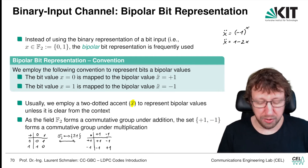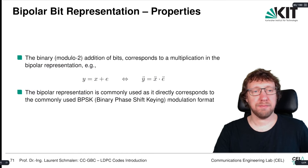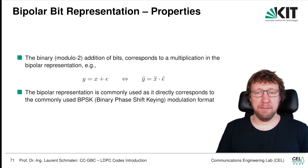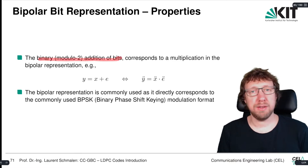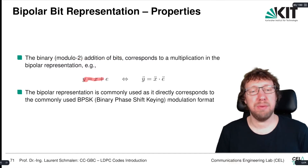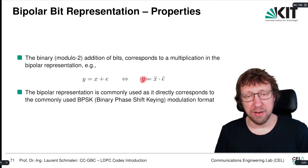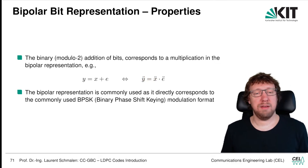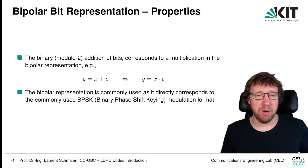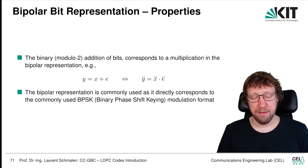For the decoder, we will frequently use this bipolar representation because it has some very nice advantages. Because of this isomorphism, binary XOR addition of bits corresponds to a multiplication of the bipolar representation. So we can write that y equals x plus e (binary vector plus error vector) is equivalent to saying y-double-dot equals x-double-dot times e-double-dot. The bipolar representation is very often used, and it also closely resembles binary phase shift keying BPSK modulation.